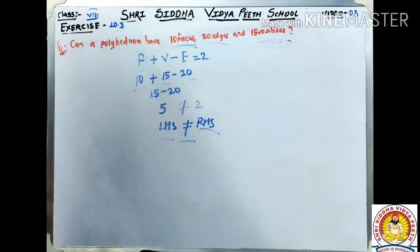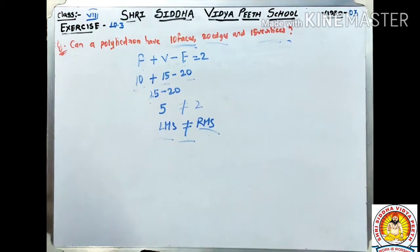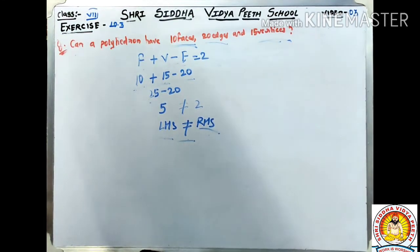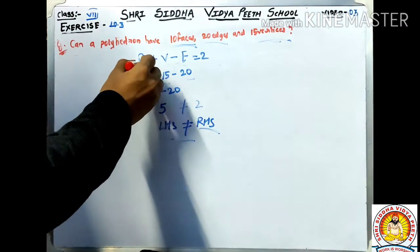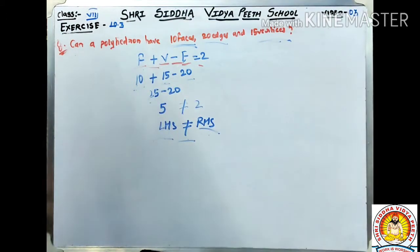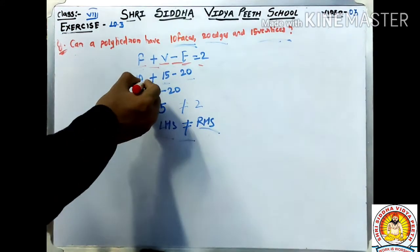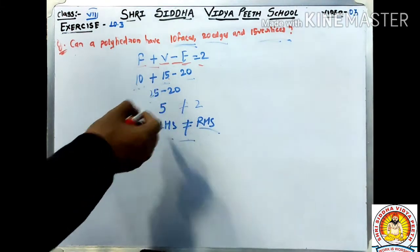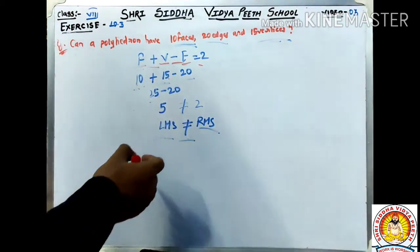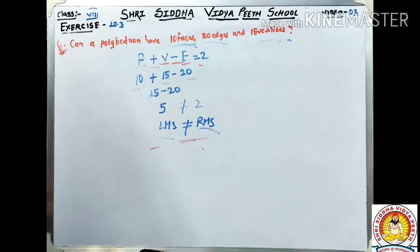Now Question Number 8: a polyhedron has 10 faces, 20 edges, and 15 vertices. We check if this is possible using Euler's formula: F plus V minus E equals 2. Here F equals 10, V equals 15, E equals 20. So 10 plus 15 minus 20 equals 25 minus 20 equals 5. Since 5 does not equal 2, LHS does not equal RHS, so this polyhedron is not possible.